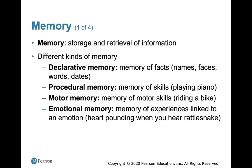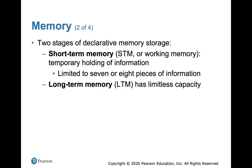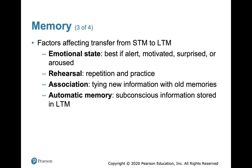Memory is the storage and retrieval of information. You have different kinds: declarative memory, procedural memory, motor memory, and emotional memory — the memory of an experience is linked to an emotion. There are two stages of declarative memory storage: short-term memory, which is a temporary holding of information usually limited to about seven or eight pieces, and long-term memory, which has a limitless capacity. Factors affecting the transfer from short-term to long-term memory include your emotional state — you're best if you're alert, motivated, surprised, or aroused. This is why people drink caffeine in the morning.